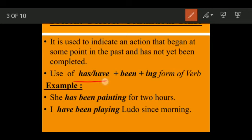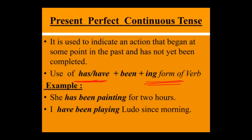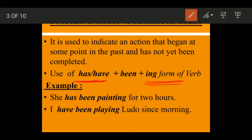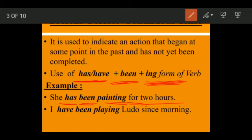In present perfect continuous tense, just like in any perfect tense, we use has or have. Since it is also continuous, we use the ing form of the verb. To join them, we use 'been': has/have + been + ing form. For example: 'She has been painting' — not 'she have been painting,' because she is singular, so we use has. She has been painting for two hours. We use 'for' here because a duration is given, not a starting point.